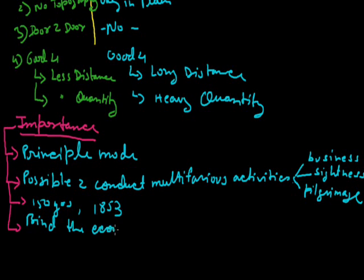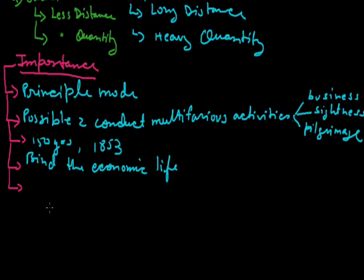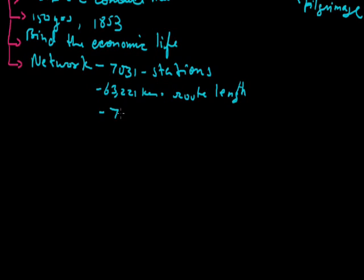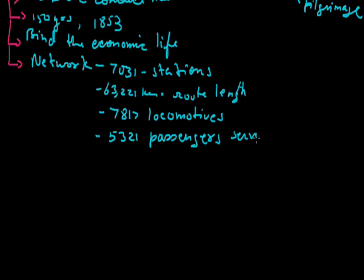Find the economic life as well as accelerate the development of industries and agriculture in India. If you see the data, then we have a network of 7,031 stations with 63,221 km long route length, 7,817 locomotives means engines, 5,321 passenger service vehicles.